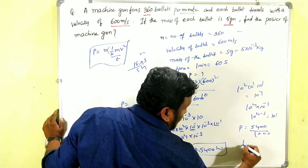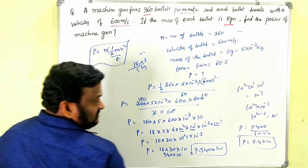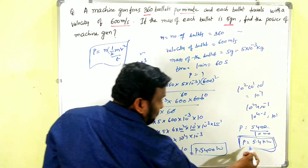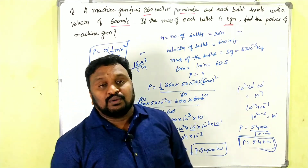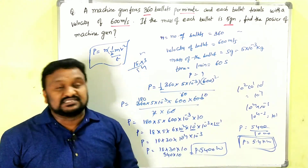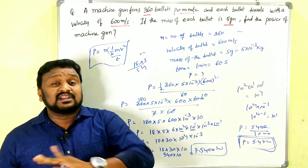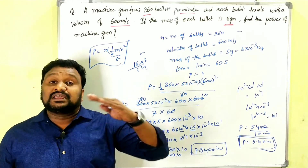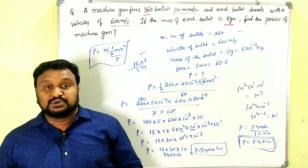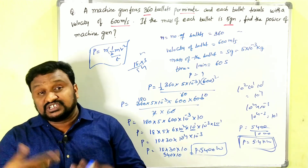Converting: 5400 watts divided by 1000 gives P = 5.4 kilowatts. So the power of the machine gun is 5.4 kilowatts. We just needed to take the formula step by step to get the answer — it's worth 2 marks. Like, share, subscribe. Thank you!